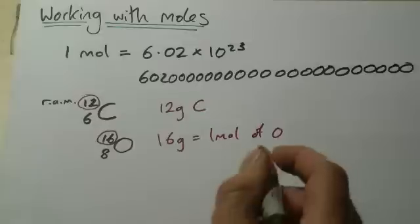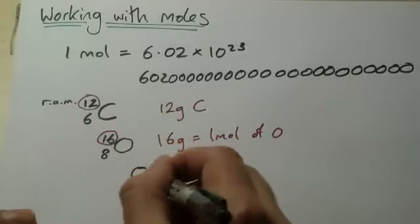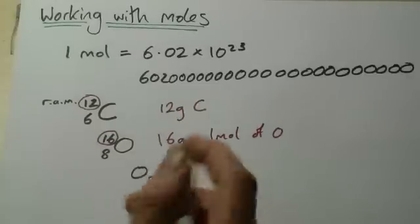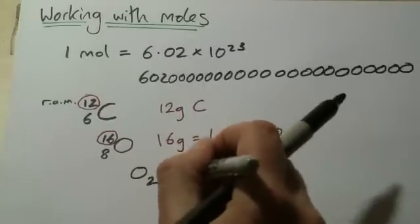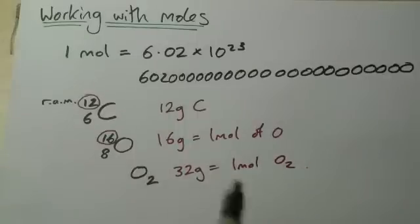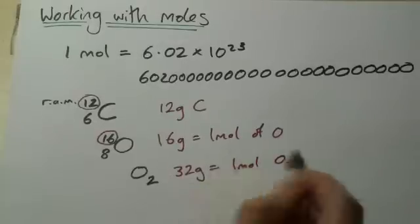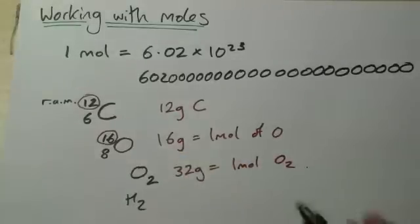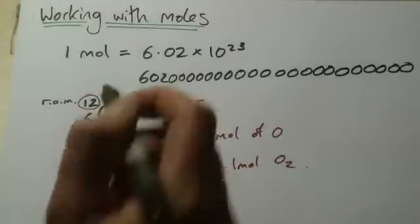Now it does get a bit more tricky. For example, oxygen doesn't go around on its own normally - it goes around as a diatomic molecule, O2. So if you're talking about a mole of O2, because there are two oxygen atoms in it, you'd need twice as much, or 32 grams equals one mole of O2. When thinking about moles, make sure you're clear whether you're talking about the individual atom or the molecule such as O2, H2, or F2.